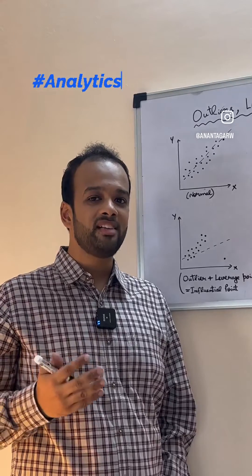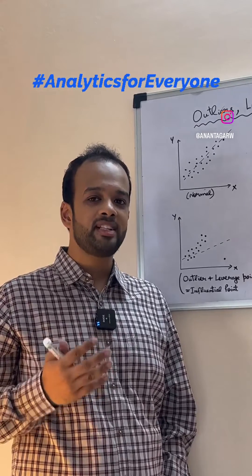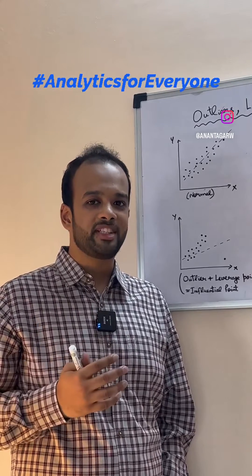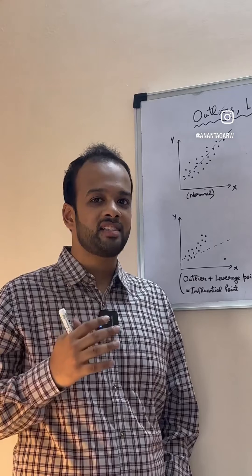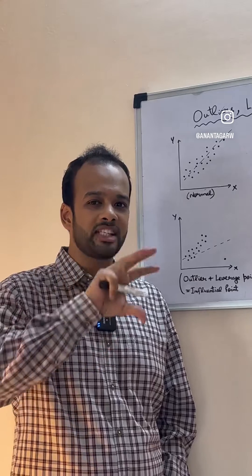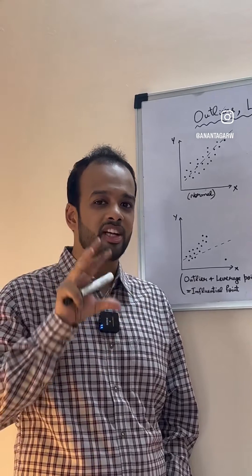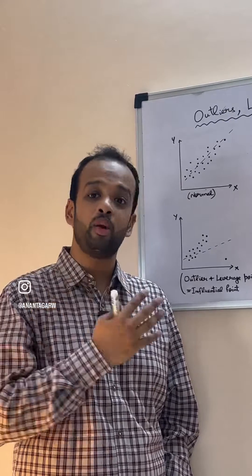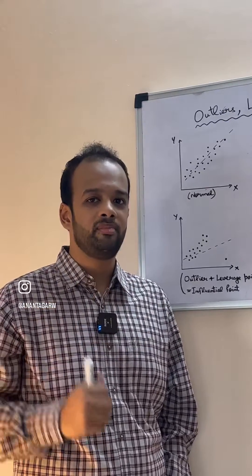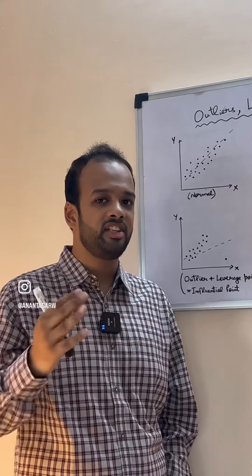Let's understand what are outliers, leverage points, and influential points. When you are doing regression analysis, if all the points are scattered around the regression line and no point is standing out, all points are normal. They are neither of these three.